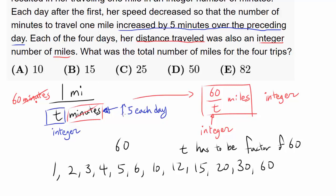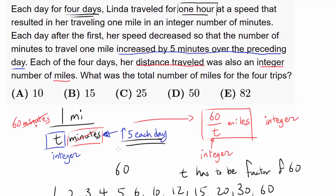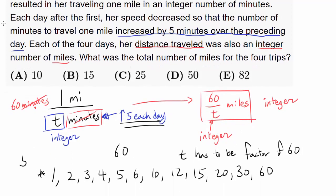And we know T is increasing by 5 each day, and we are traveling for 4 days. So we have to select 4 factors, because we are traveling for 4 days. So we want to select 4 factors of 60, separated by 5, because T is increasing by 5. And it's pretty easy to figure that out. There's 5, 10, 15, and 20.